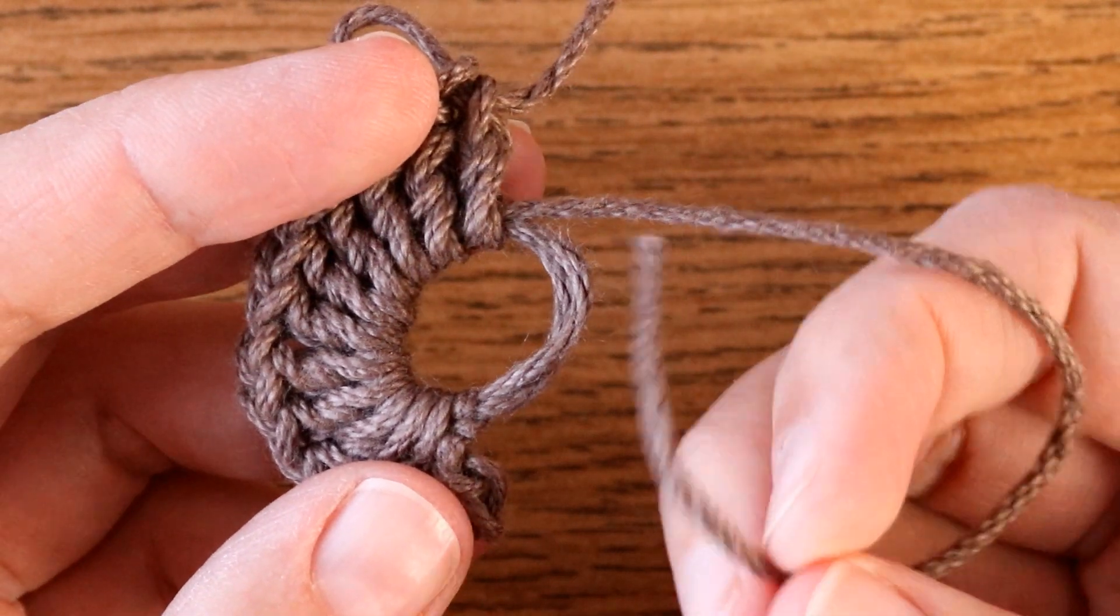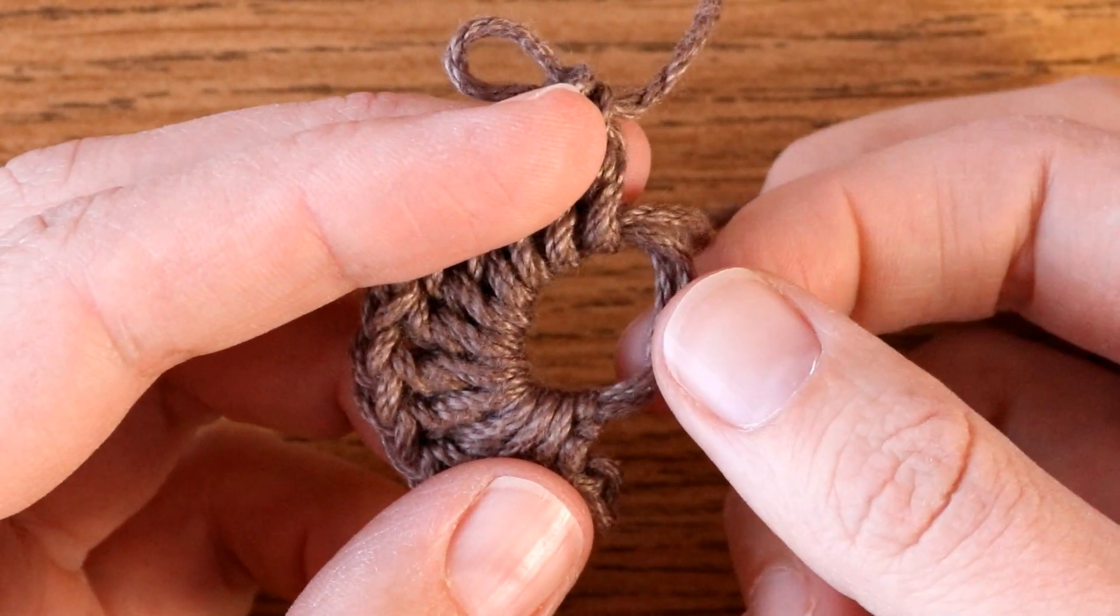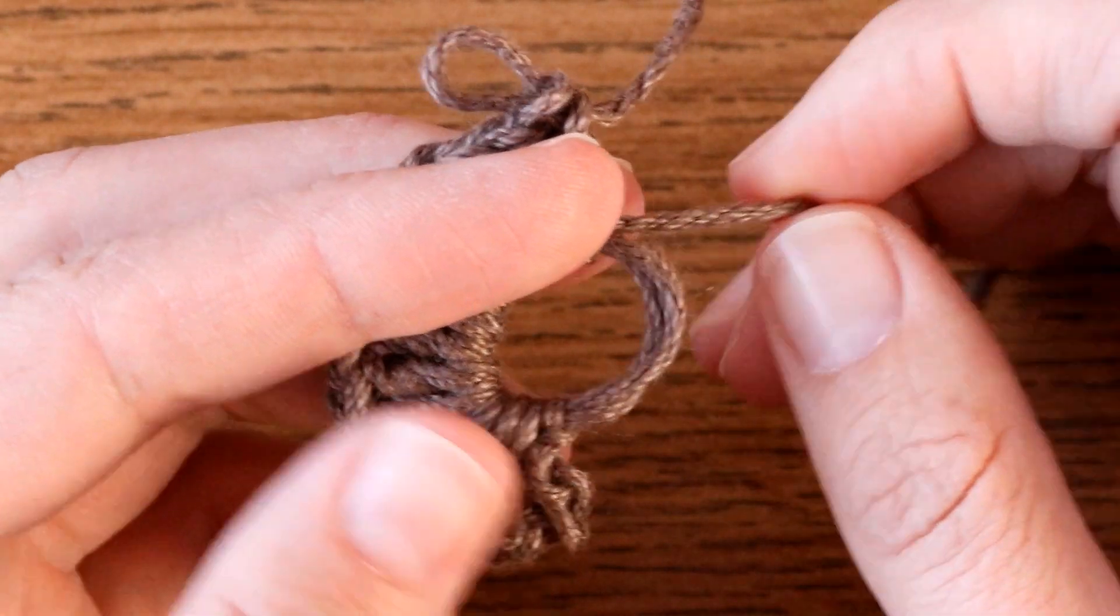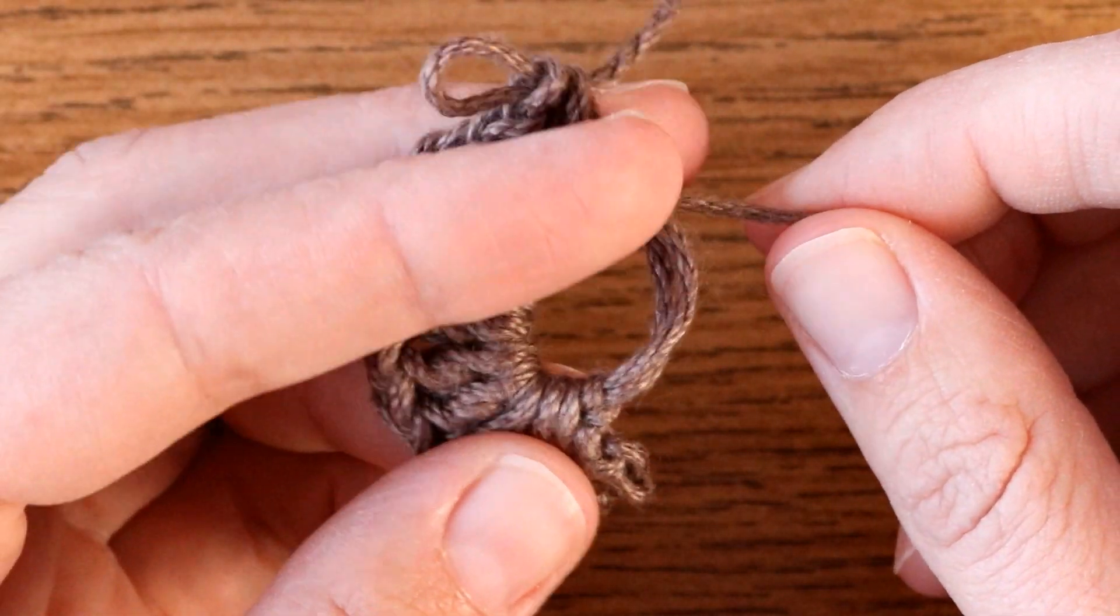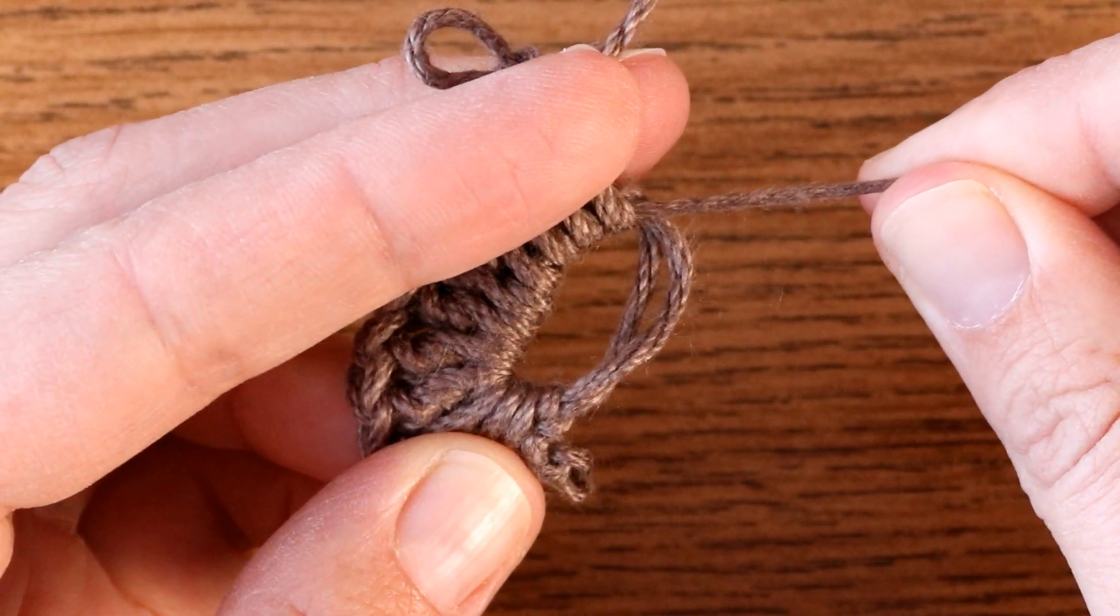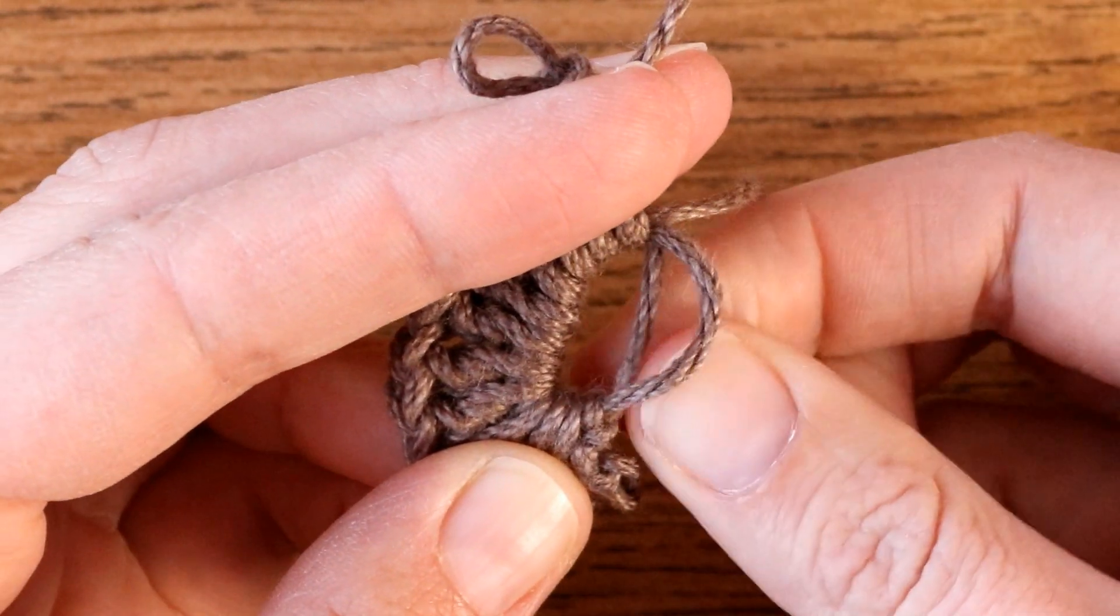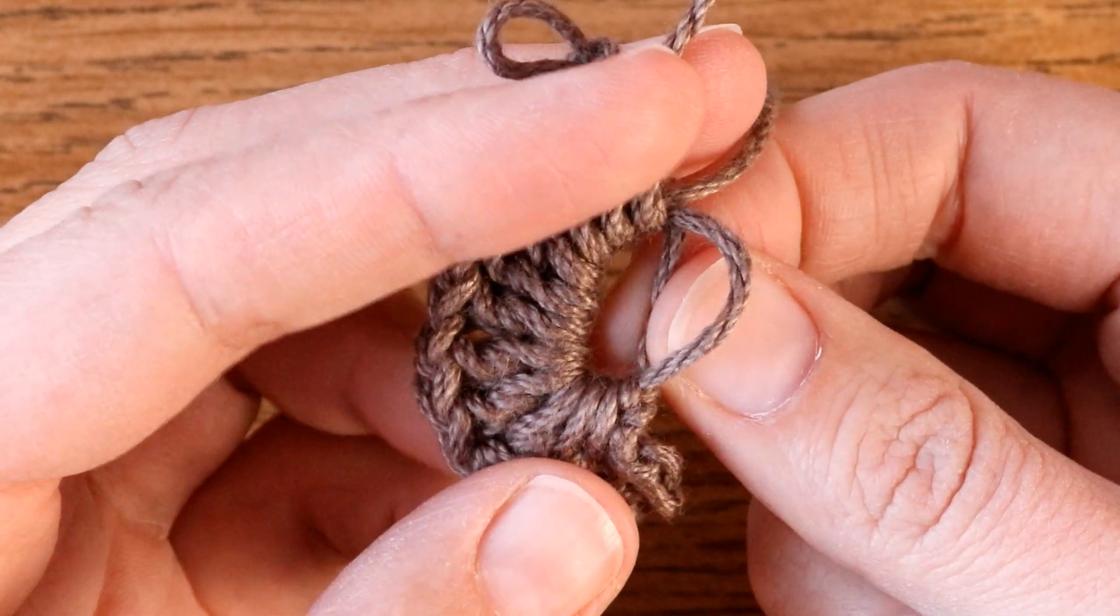Just to show you that again, I'm going to tug on this tail and we should see that one of these cords that makes up our hoop is going to shorten. We can see that one at the back there has become shorter.